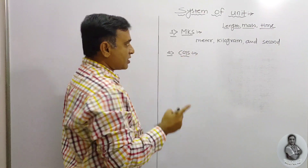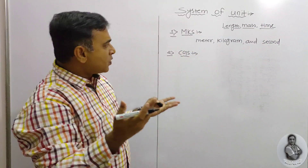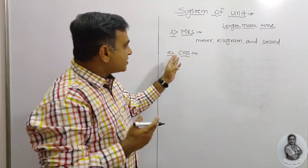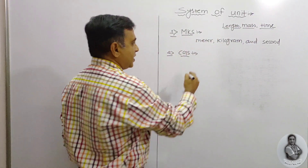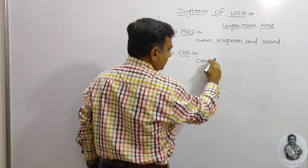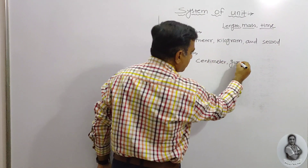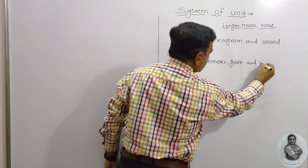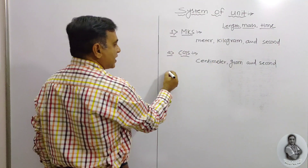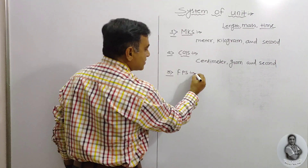The second one is the CGS system. In this CGS system, once again we take the three physical quantities — length, mass, and time. In this system, length, mass, and time are expressed in centimeter, gram, and second respectively.